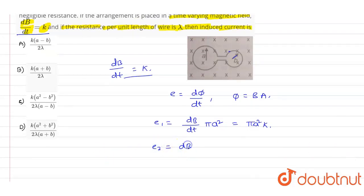written as ε₂ equals dB/dt times πb², which equals πb²k.